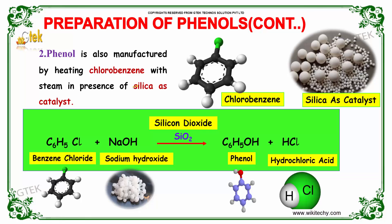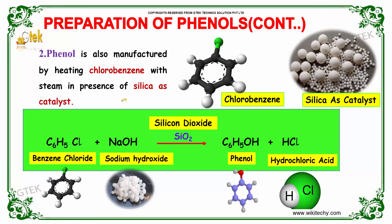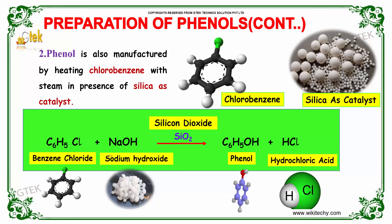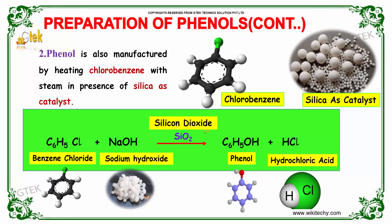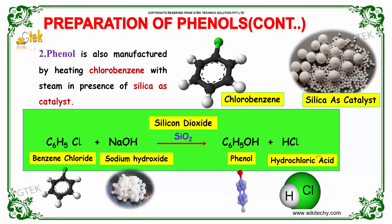Phenol is also manufactured by heating chlorobenzene with steam in the presence of silica as a catalyst. Chlorobenzene along with sodium hydroxide in the presence of silicon dioxide gives phenol and hydrochloric acid.